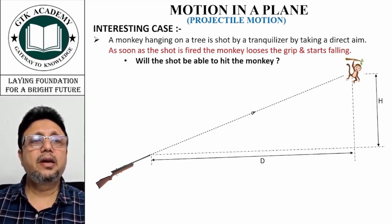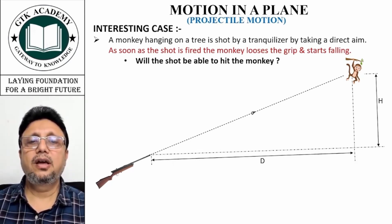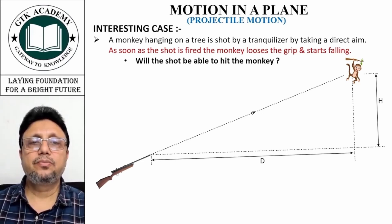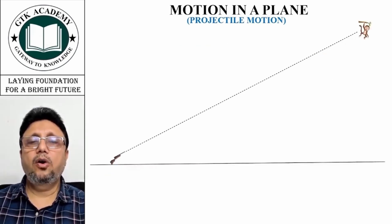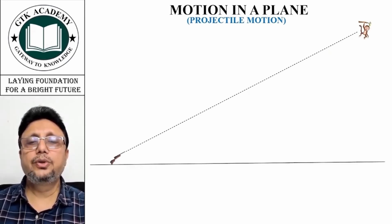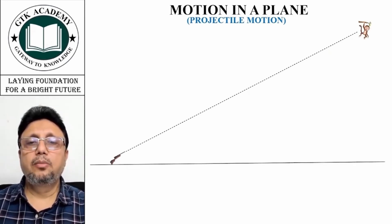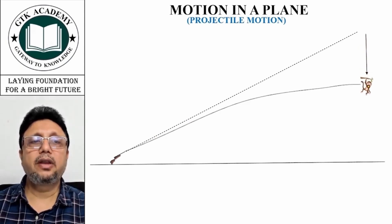Now the height of the monkey is h and the distance is d from the place where we are shooting it. In order to hit the monkey, what should happen? The moment you fire the shot, the shot will go in this direction and the monkey will start falling.